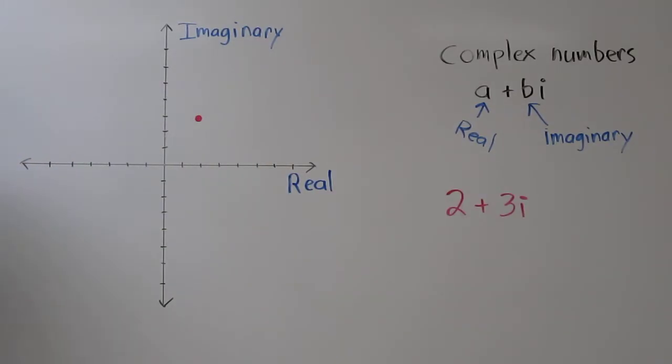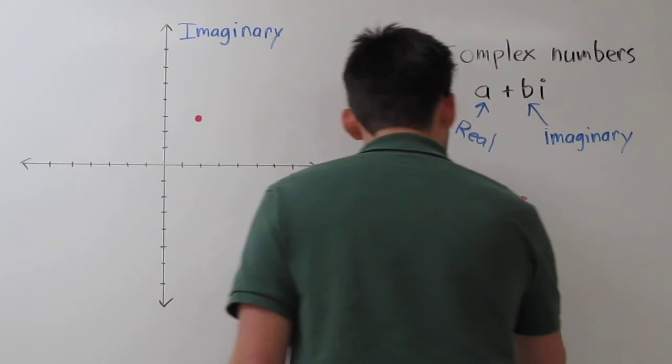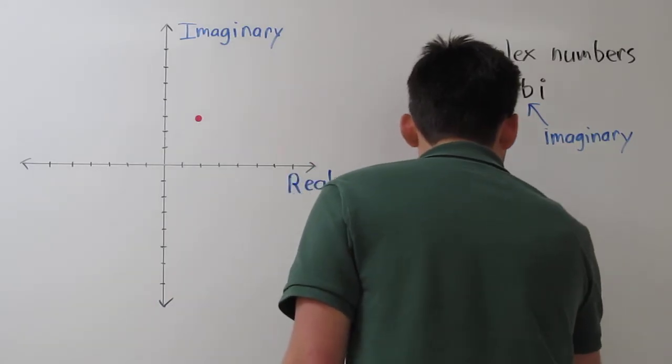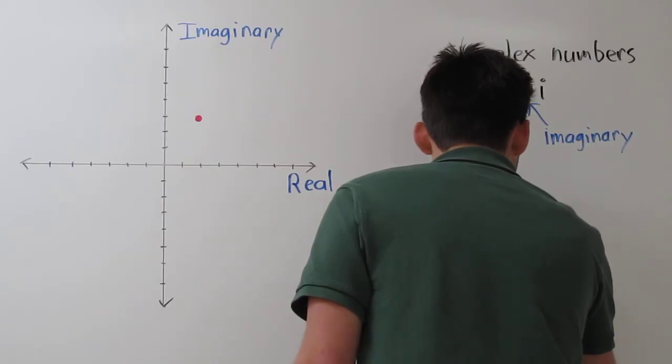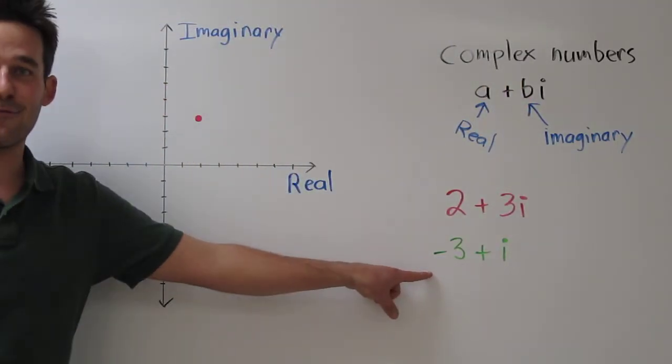Let's try another one. We'll do it in green this time. How about negative 3 plus i? Now the real part is negative 3, and the imaginary part is the coefficient 1.